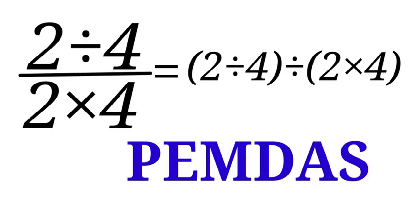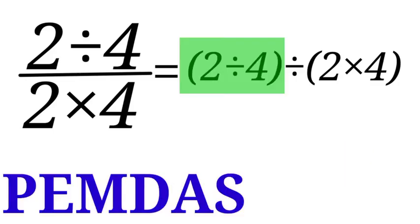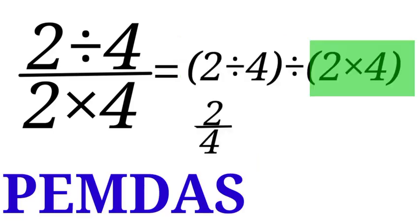Let us go back to our problem. We first handle the ones inside the parentheses since P comes first in PEMDAS. The first bracket, 2 divided by 4, can be written as 2 over 4. The second bracket, 2 times 4, gives us 8, written as 8 over 1.